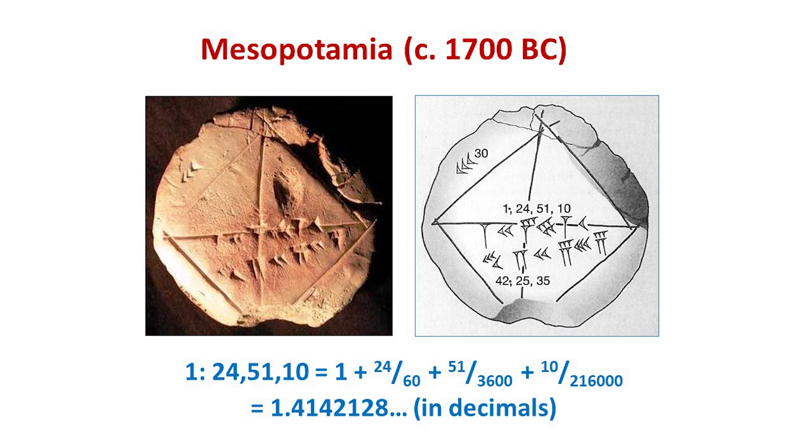This clay tablet, from around 1700 BC, shows a square with its diagonals. And the base 60 number is 30 along the side of the square, and 42, 25, 35 at the bottom. And this is 30 times the square root of 2, the length of the diagonal.